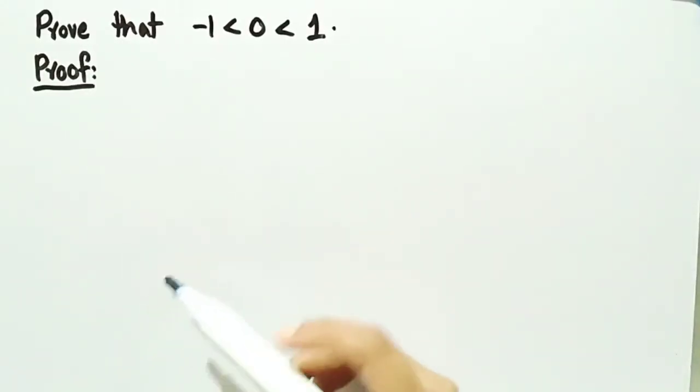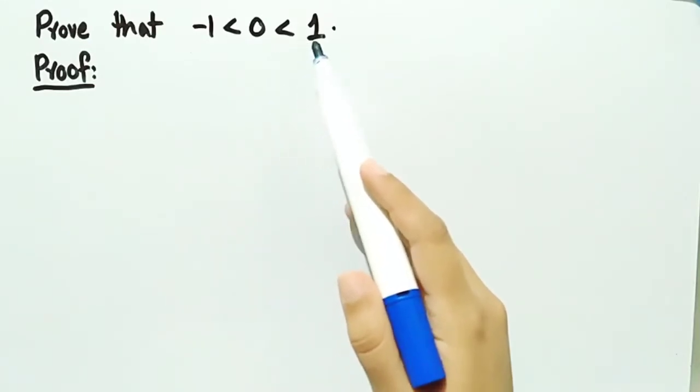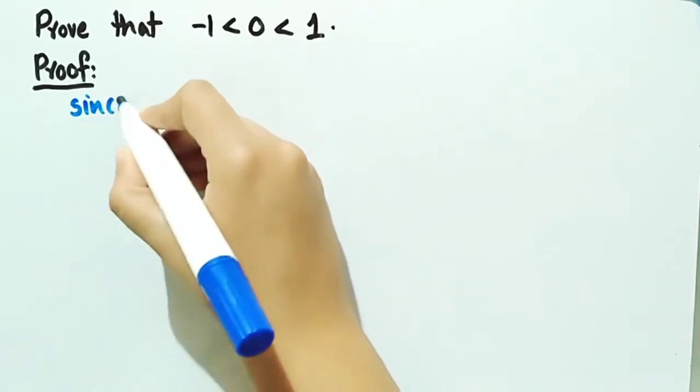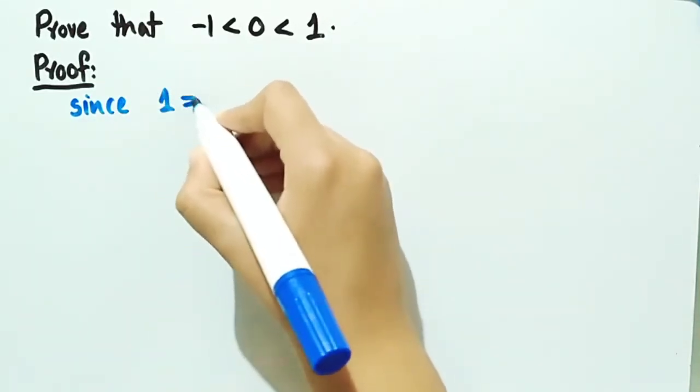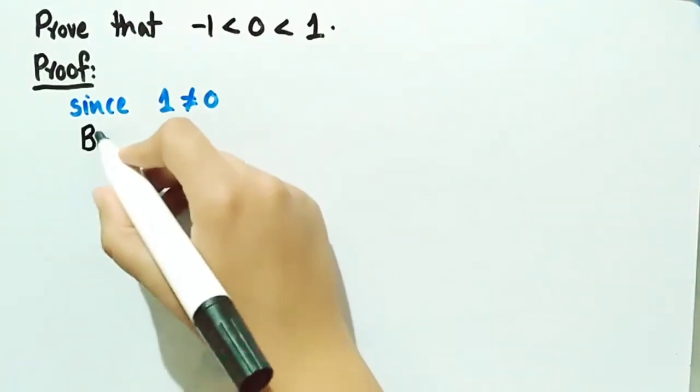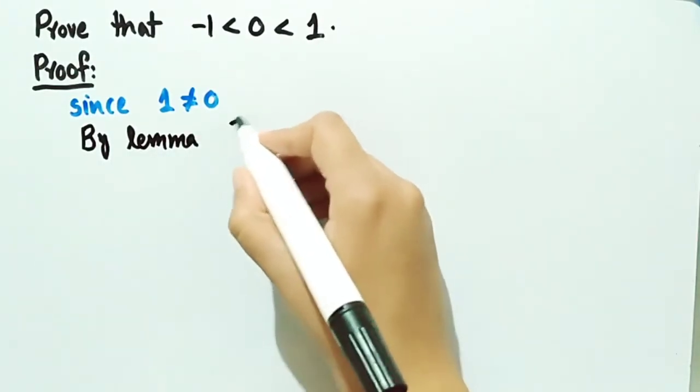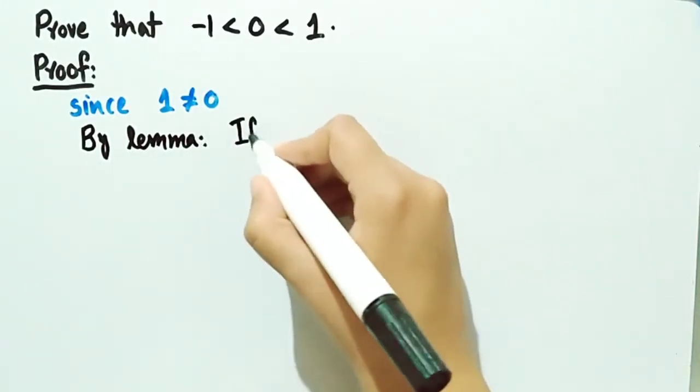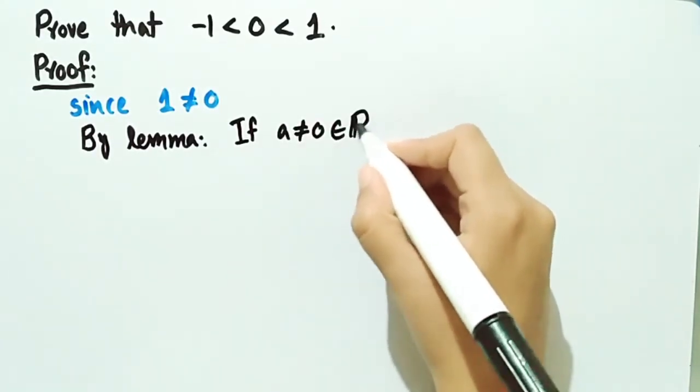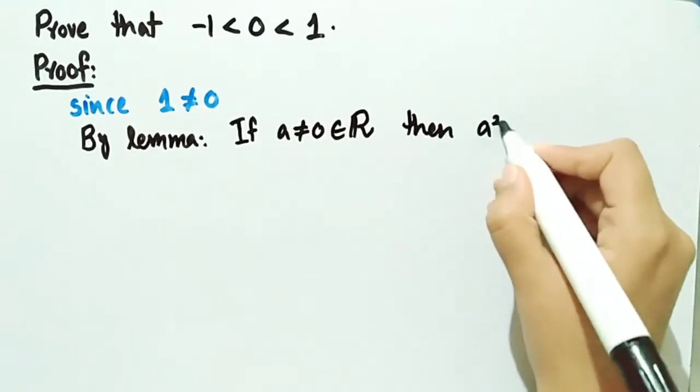In this video, we will prove the lemma that -1 < 0 < 1. Since we know that 1 ≠ 0, we can use the lemma which states that if a is a non-zero real number, then a² > 0.